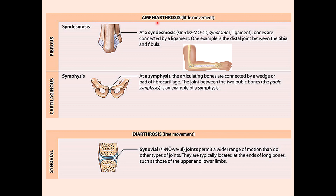The second type of joint based on mobility is amphiarthrosis, which allows some but not extensive movement. It is divided into fibrous and cartilaginous types. The fibrous type is called syndesmosis, made of dense regular connective tissue. Examples include the joint between the tibia and fibula in the lower extremity and between the radius and ulna in the upper extremity.